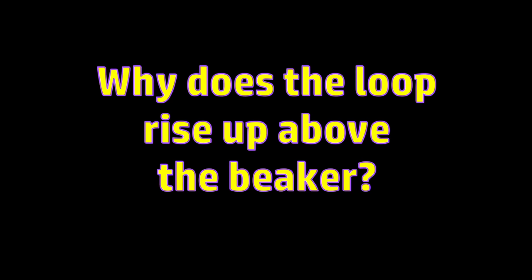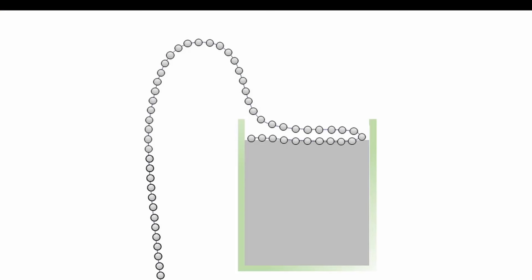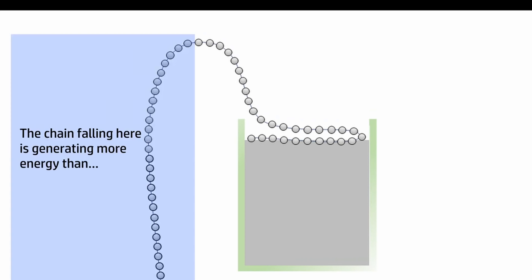The answer to question one, why does the loop rise above the beaker, is both simple and kind of unsatisfying. The work done by the chain falling outside of the beaker is greater than the work required to lift the chain out of the beaker because the chain outside of the beaker is falling to a lower level than the chain inside. This is the same phenomenon as a liquid siphon. The chain falling over here creates enough force to lift the chain here up this high before it falls over. Don't worry, this is not the interesting part.